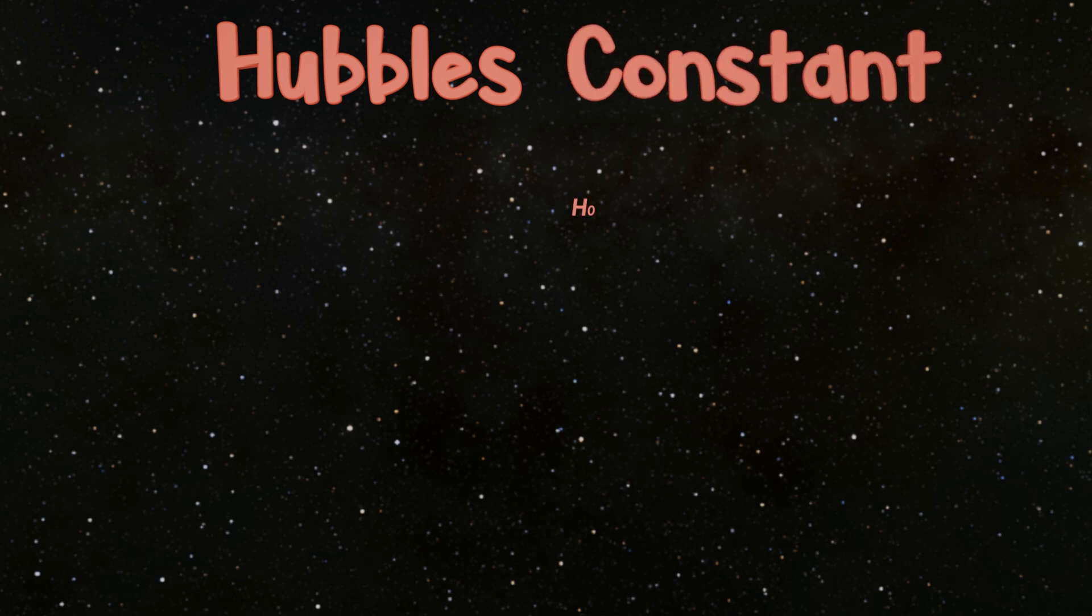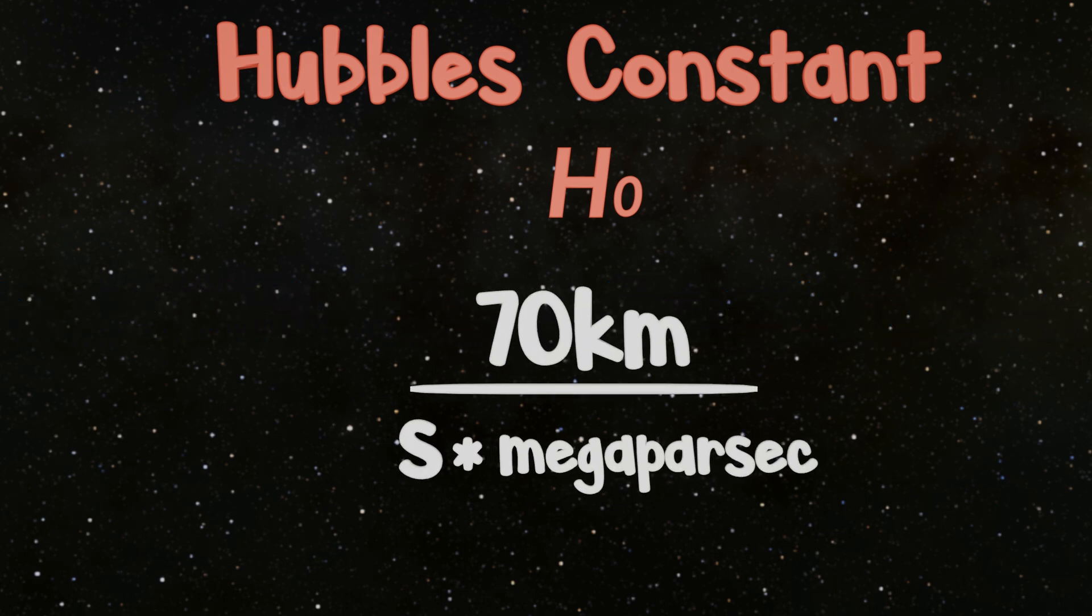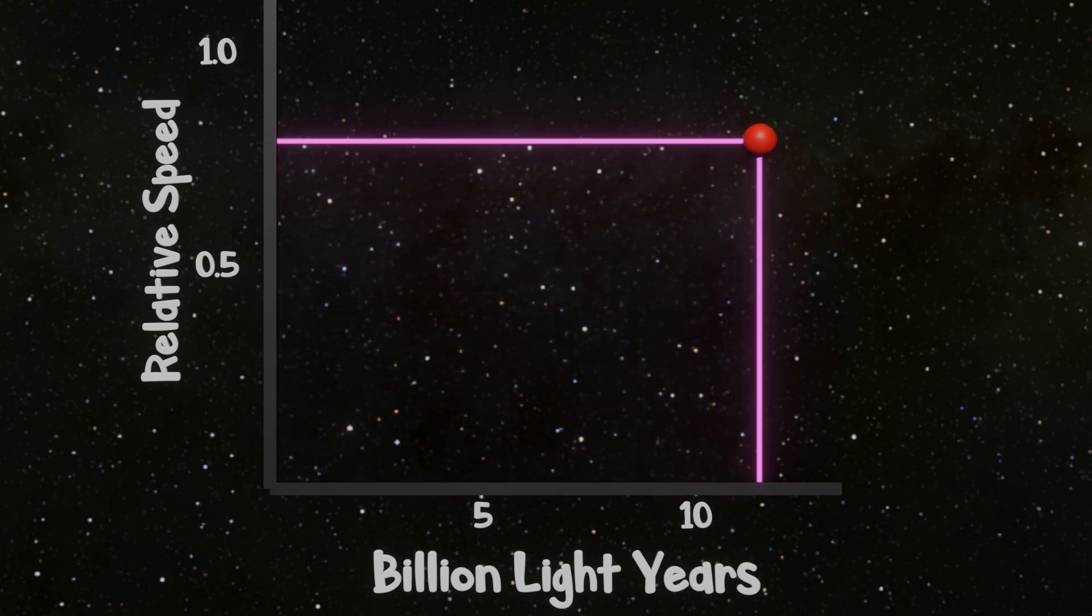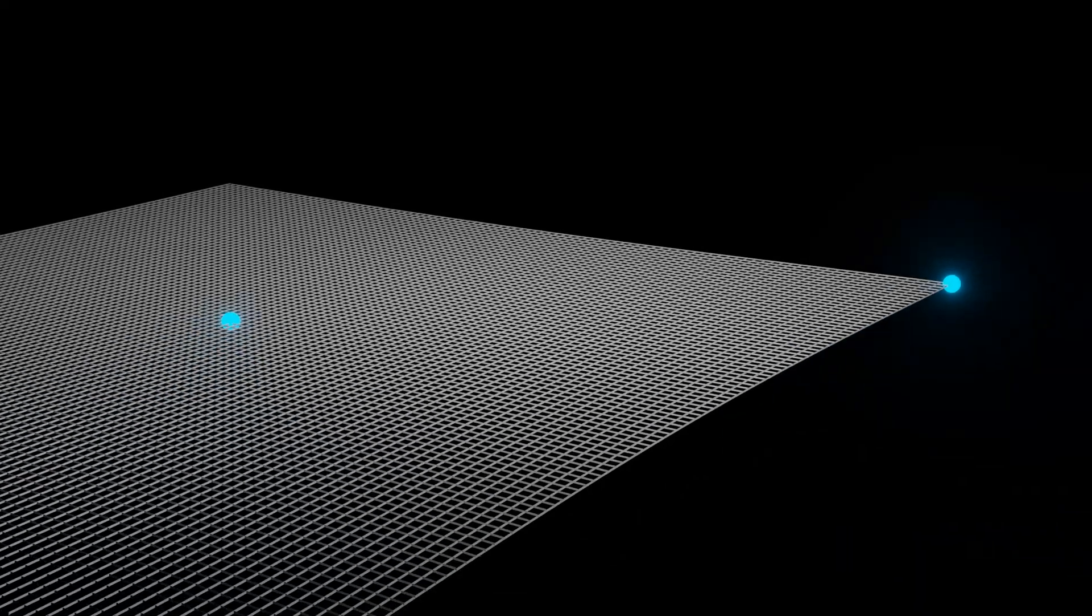As touched upon in my previous video, points in space expand away from each other based off Hubble's constant. This is a measured factor predicting that points in space expand from one another at around 70 kilometers a second every megaparsec between them. On a universal scale, this speed is inconsequential, but over extreme, vast distances, that cumulative 70 kilometers per second adds up, and eventually points in space begin expanding away from each other at relativistic speeds.